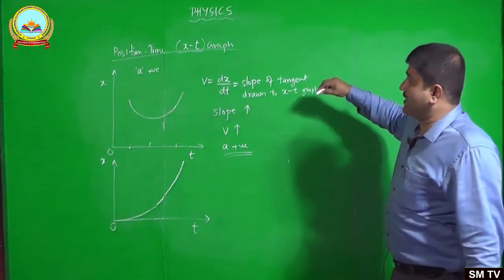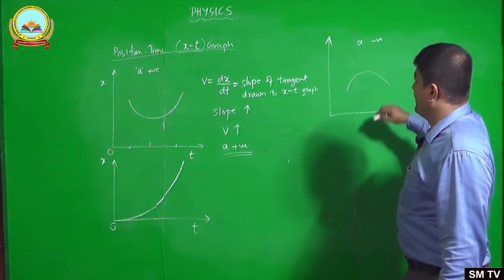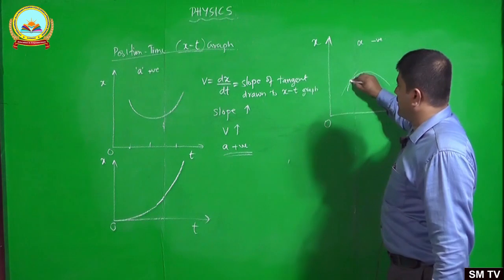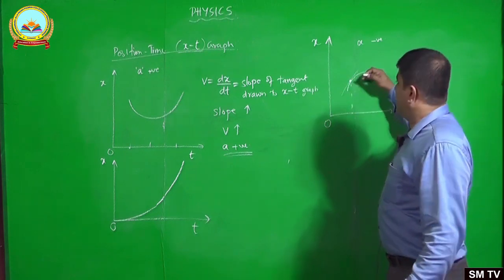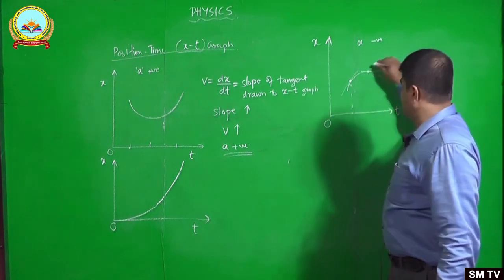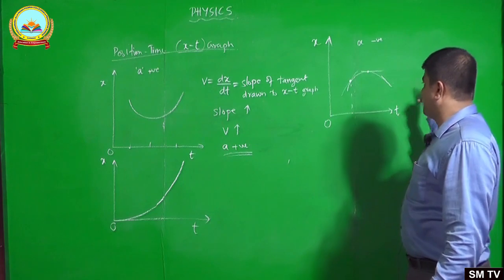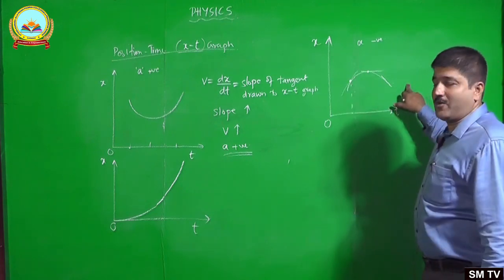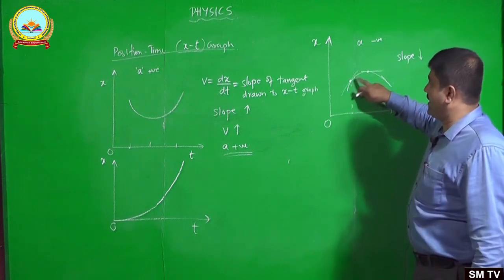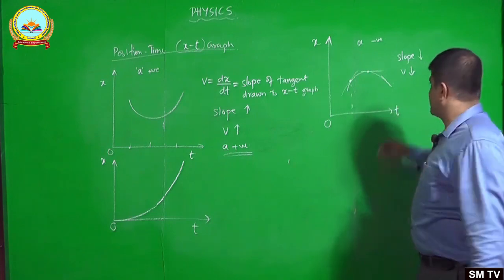Another situation is negative acceleration. For negative acceleration, as given in the book, the XT graph looks like this. If I draw the tangent to this XT graph at the beginning, it has a positive slope, and the slope continuously decreases. At the highest point, slope becomes zero — meaning velocity becomes zero. When you go further right, the slope of the tangent becomes negative and more negative.